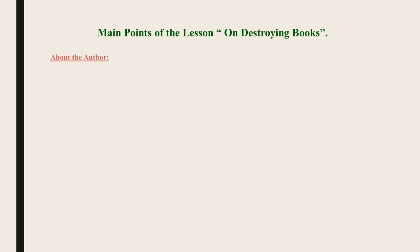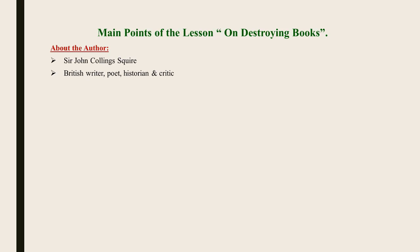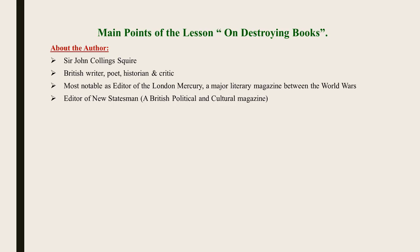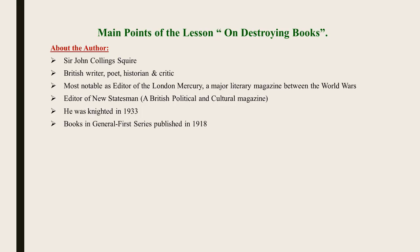Now let's have a view of main points of the lesson on destroying books. First, we are going to have some information about the author. The name of the writer is Sir J.C. Squire. He was a British writer, poet, historian and critic. The most notable thing about him is that he worked as editor of the London Mercury, a major literary magazine between the world wars. He was also the editor of the New Statesman, a British political and cultural magazine. He was knighted in 1933. He wrote a book with the name of Books in General and its first series was published in 1918.